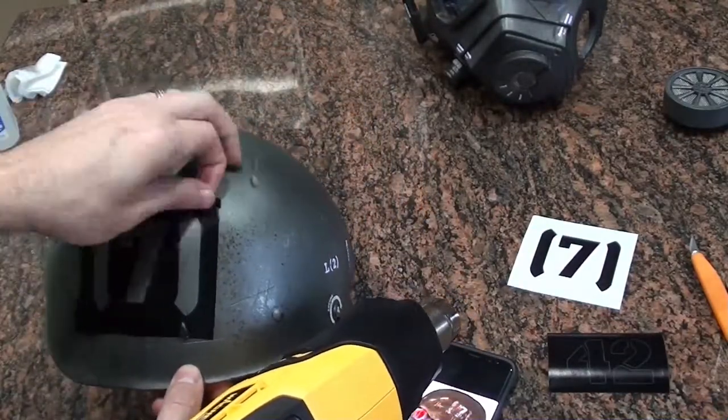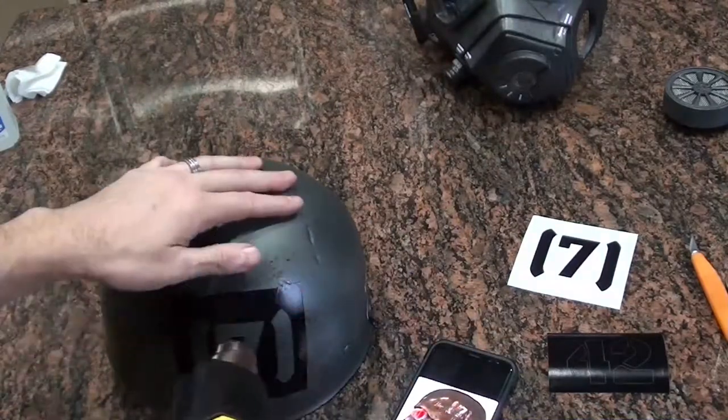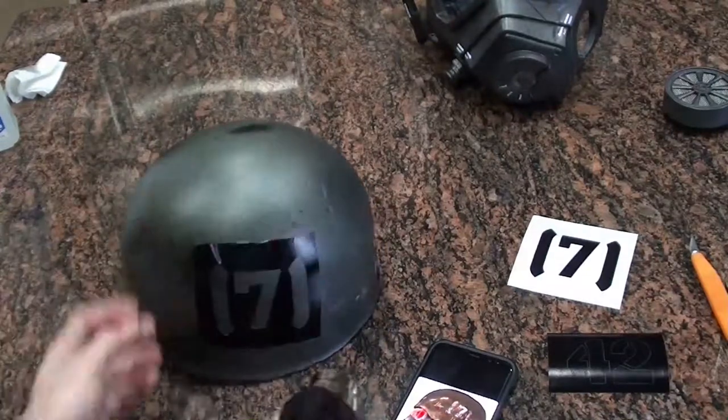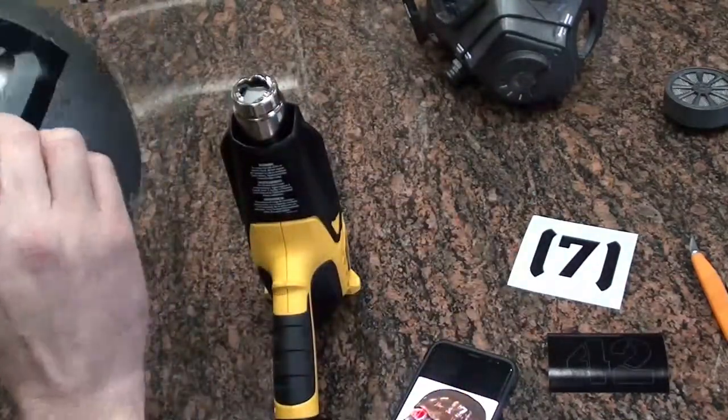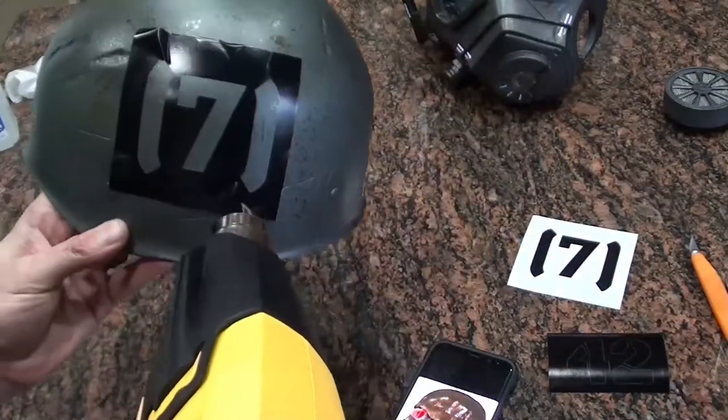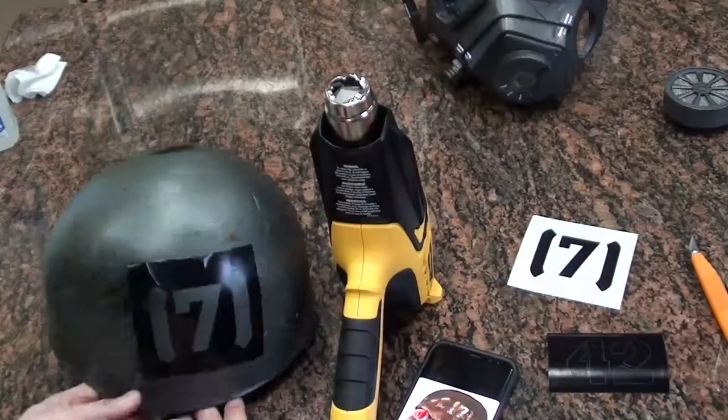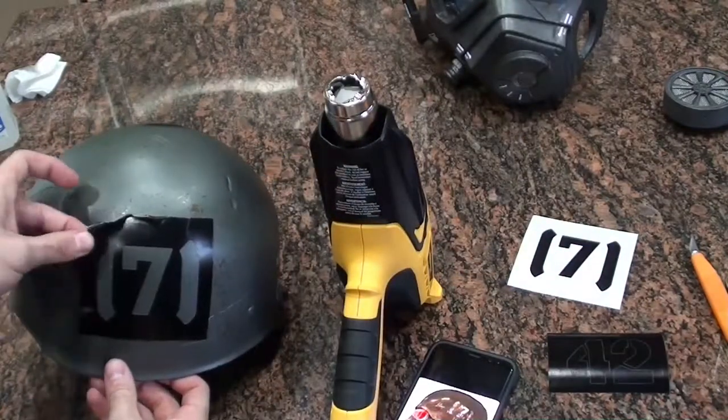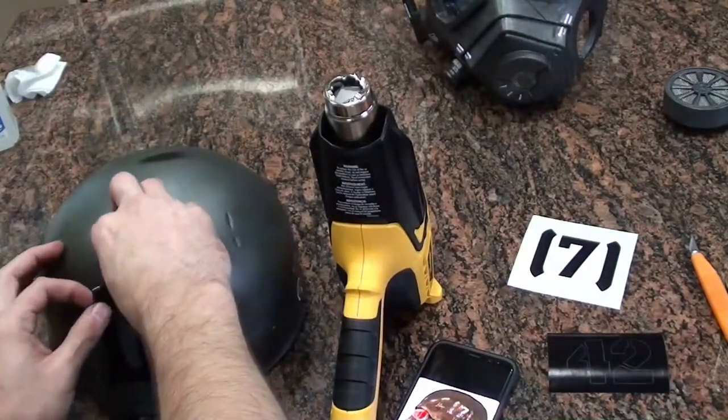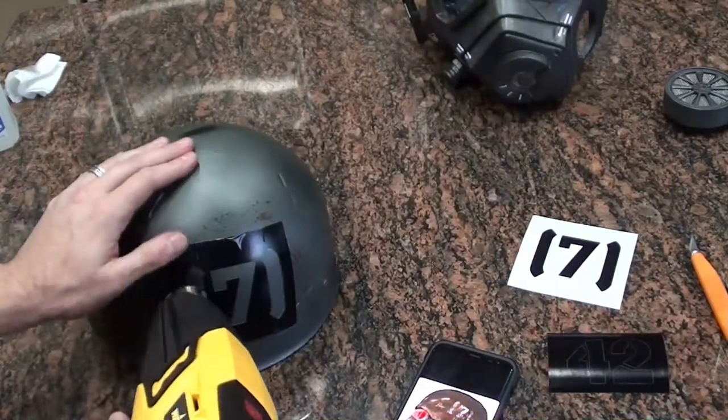You can peel up the vinyl mask to work out any of the wrinkles or bubbles that are showing up. It doesn't have to be perfect. You're just mainly concerned with the area around where the actual painting is going to happen, the border of the painting. You want to make sure that's stuck down good without any wrinkles. Throughout the body of the mask or around the outside edges, it doesn't really matter if there's wrinkles there.